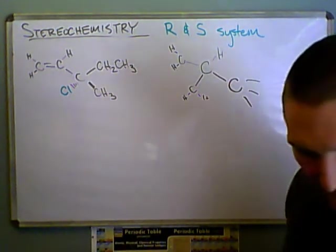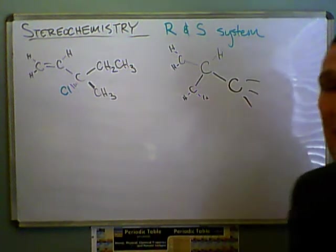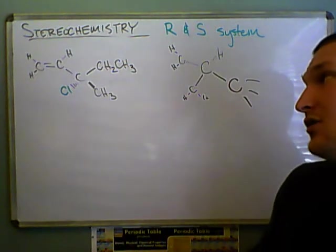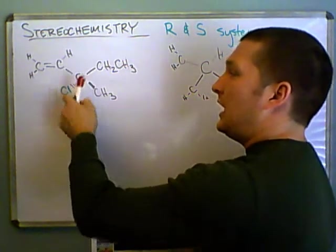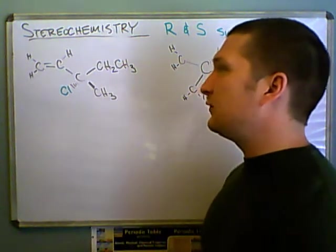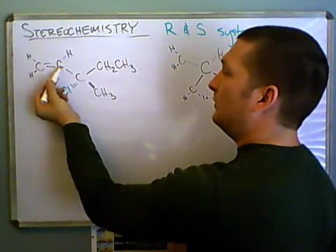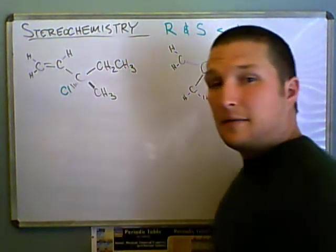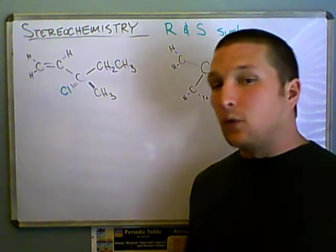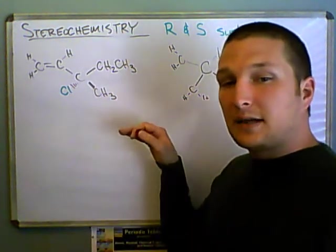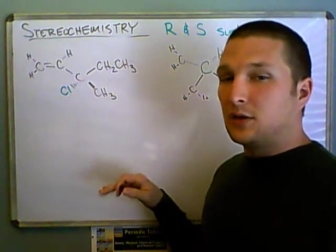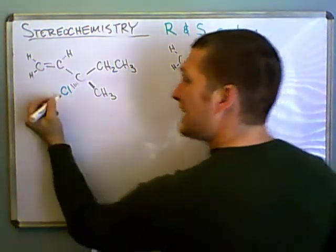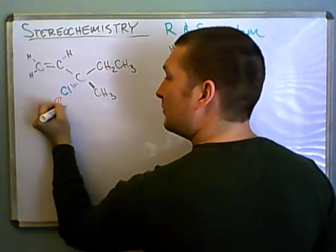Let's assign priority. You don't always have to count everything up — sometimes it's pretty obvious. We're going to start with the chiral center and work out to find the first point of difference. Here we have a carbon, a carbon, a carbon — they're all tied. Here we have a chlorine. Which is heavier, chlorine or carbon? If you look at the periodic table, chlorine is in a completely different period, so it's a lot heavier than carbon. This is going to be my heaviest, so I'll give it the highest priority: four.